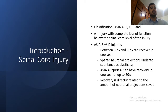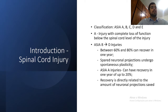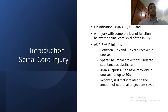We can classify spinal cord injuries as ASIA grades A, B, C, D, and E. Type A injury is a complete injury with no sensory or motor function preserved below the level of injury. Type B is sensory incomplete — sensory but not motor function is preserved below the neurological level. ASIA C is motor incomplete — motor function is preserved below the neurological level, but more than half of key muscle functions below the injury level have a muscle grade less than 3.